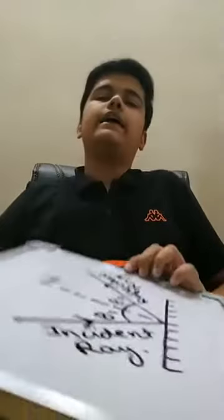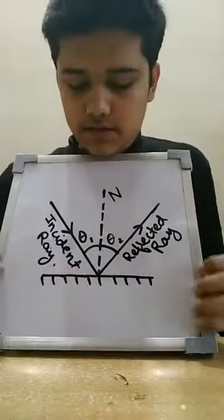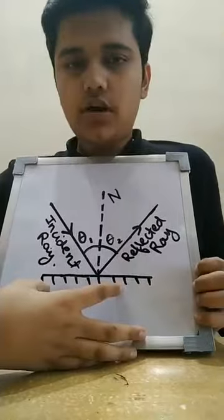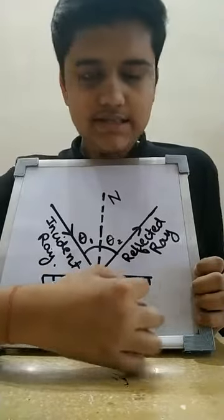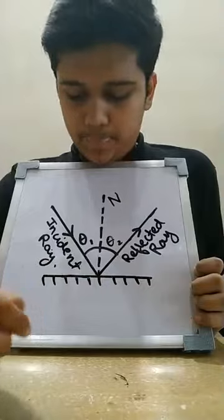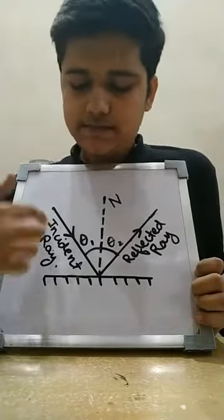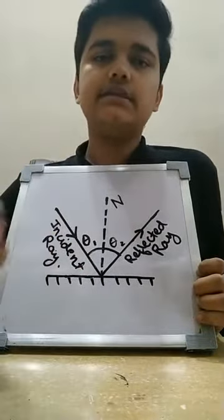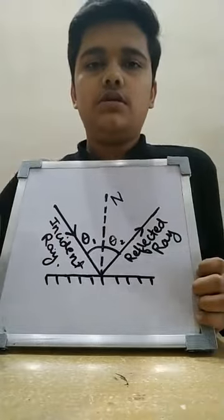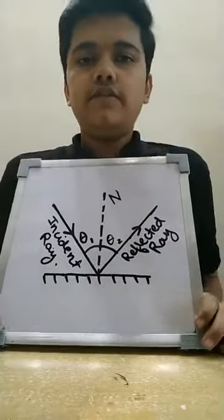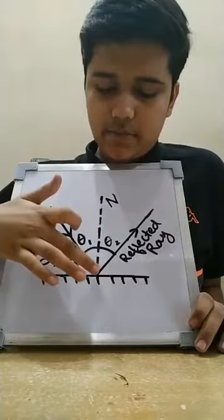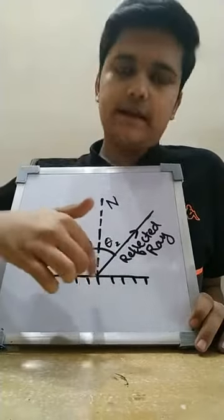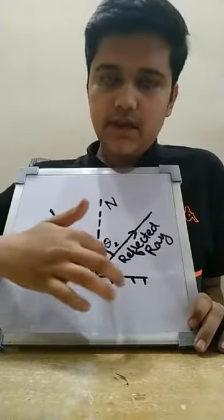I will be explaining that with the help of a diagram. So here you can see, this is called a mirror which is shaded from one side. These lines represent the shaded part. Here I have marked the incident ray — this is the incident ray, which is the one coming from a source. And this part is getting reflected.